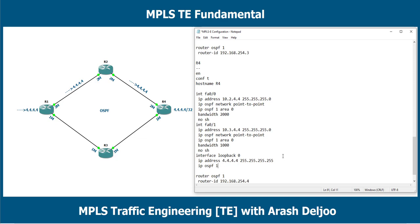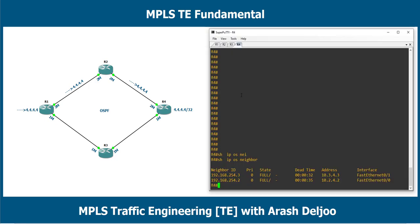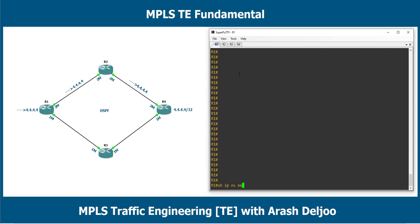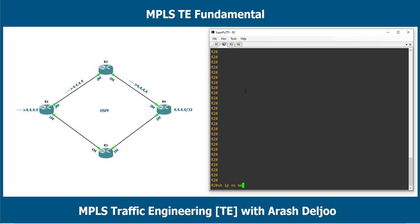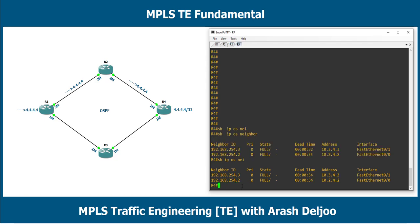This is the initial configuration of the scenario. Let me show you the result. From the CLI of router 1, if you check 'show ip ospf neighbor', we can see that R1 has two neighbors: router 2 and router 3. In router 2, 'show ip ospf neighbor' shows two neighbors: router 1 and router 4. In router 3, two neighbors: router 1 and router 4. In router 4: router 2 and router 3.